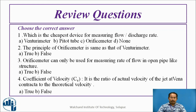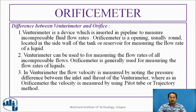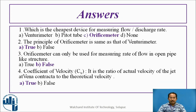These are the review questions — just go through these equations. And these are the answers: the cheapest device is the orifice meter; the principle of the orifice meter is the same as the Venturimeter, which is true. The orifice meter can be used for measuring the rate of flow in open pipe-like structures — this is wrong. The coefficient of velocity is the ratio of actual velocity of the jet to the theoretical velocity — this is true.